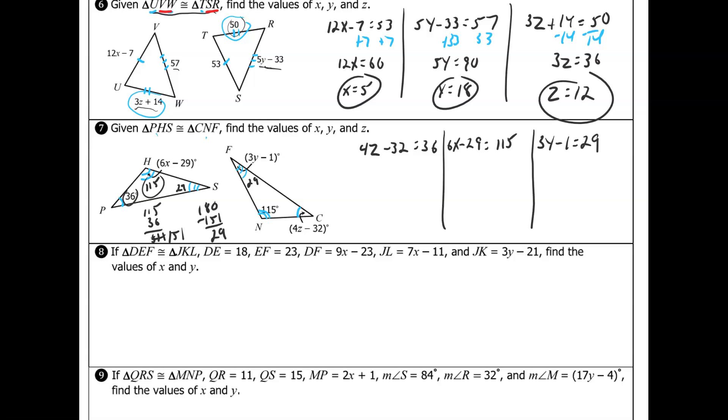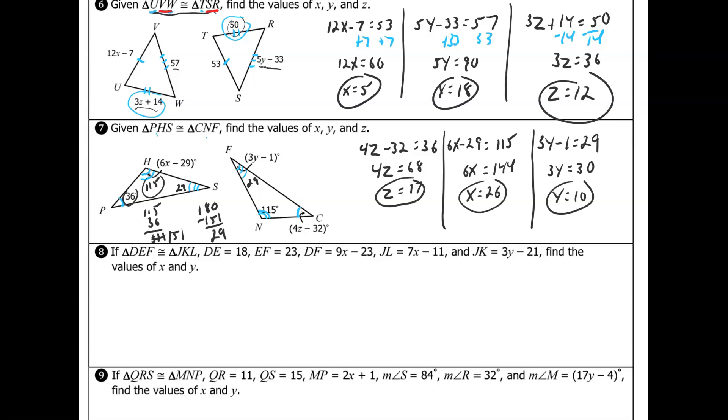Solving those three equations gives us X = 26, Y = 10, and Z = 17.